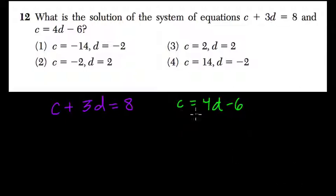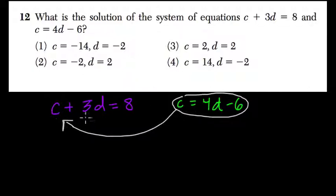I'm going to use substitution to solve this. This equation right here tells me what c equals in terms of d, right? It says c is equal to 4d minus 6. So if I take that value and plug it into this equation, something nice will happen. I'll be getting rid of one of the variables and condensing this down so the only variable is d.